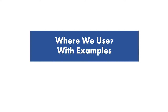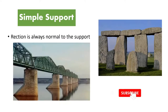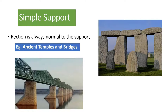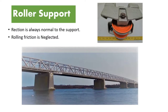All these types of supports have their own importance. Now we will see where we use each type with examples. First is simple support — as we saw, the reaction is always normal to the support. This type of support is mainly used to transfer point loads from the beam structure to the column structure. It is mainly seen in some ancient temples and some bridges, where stones are simply placed over another vertical stone which acts as a column.